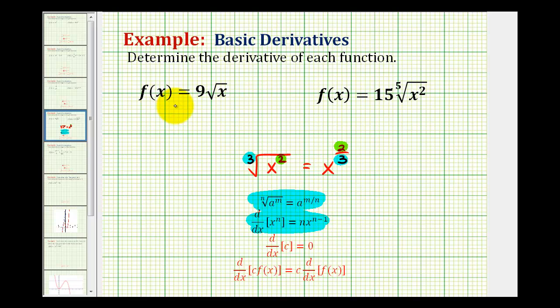So that will be the first step in determining the derivatives of these two functions. Our first function is f of x equals nine times the square root of x. For a square root, the index is two, and then this x has an exponent of one. So we can rewrite the given function as f of x equals nine x to the power of one-half. Now that we have x raised to a power, we can apply the power rule of differentiation.